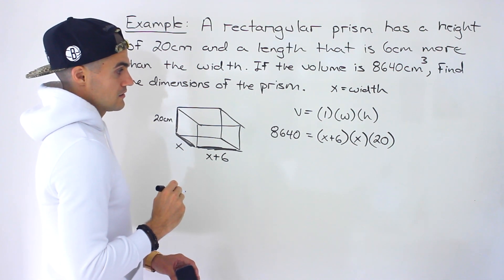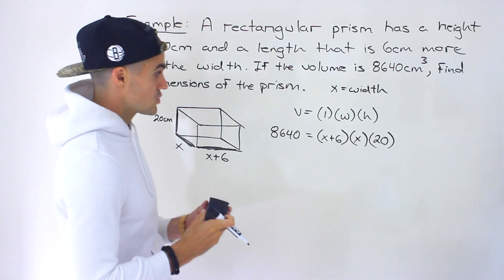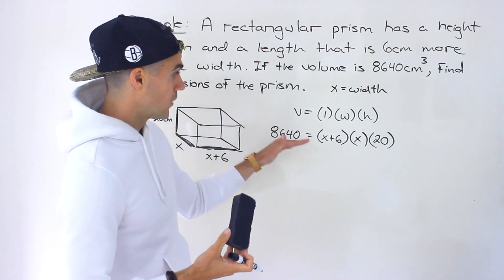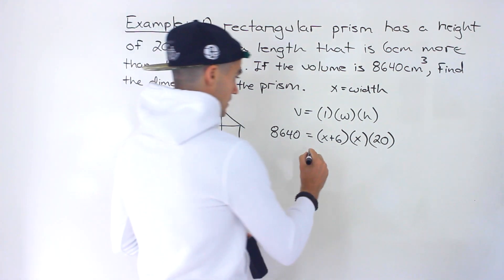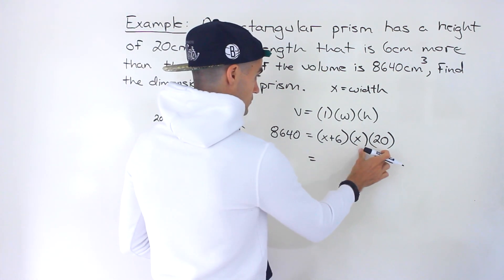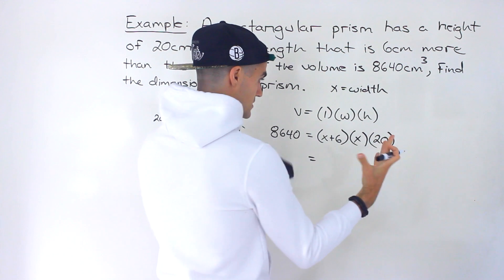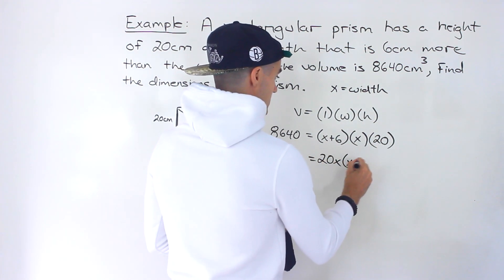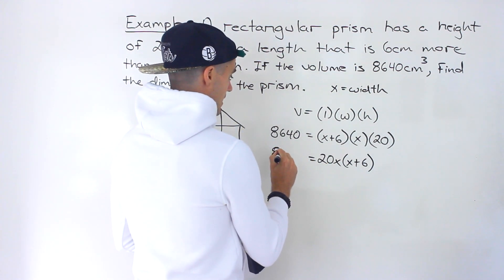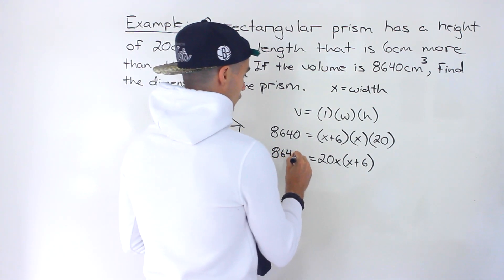From here what we want to do is solve this equation. Notice that we have an equation in terms of one variable in terms of x we could solve. To make this look a little nicer, I'll take the 20 and the x, combine those into 20x and then have x plus 6 over here. Then we've got the 8640.